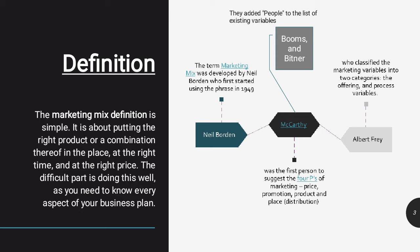The history of marketing mix: the term 'marketing mix' was developed by Neil Borden, who first started using the phrase in 1949. The second person is McCarthy, who was the first person to suggest the four Ps for marketing: price, promotion, product, and place. The third person is Albert Frey, who classified the marketing variables into two categories: the offering and the process variables. Other contributors added to the list of existing variables.